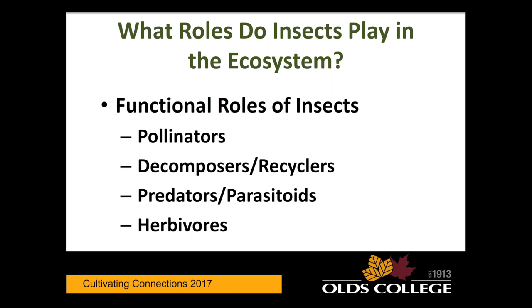Honey bees are also a bit bullies — there are so many of them. Their hives tend to be 1,000 to 50,000 individuals, while bumble bees are 50 to 100 per individual nest. When honey bees go out foraging, they can actually bogart the resources — they will bully the bumble bees and take over a lot of the resources.